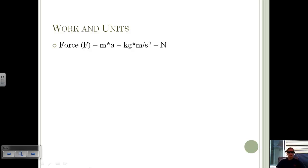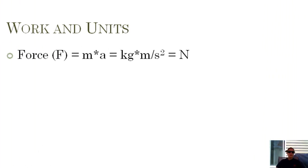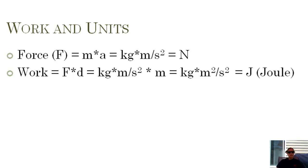Let's look a little bit more at work and the different units of all these variables. Work is force times distance. Force is mass times acceleration. The units are kilograms for mass, meters per second squared for acceleration. We put all those together—that's called a newton. So force has units of newtons. If we then take force and multiply by distance to get work, we get kilogram meter squared per second squared, which is a joule. So work has units of joules.